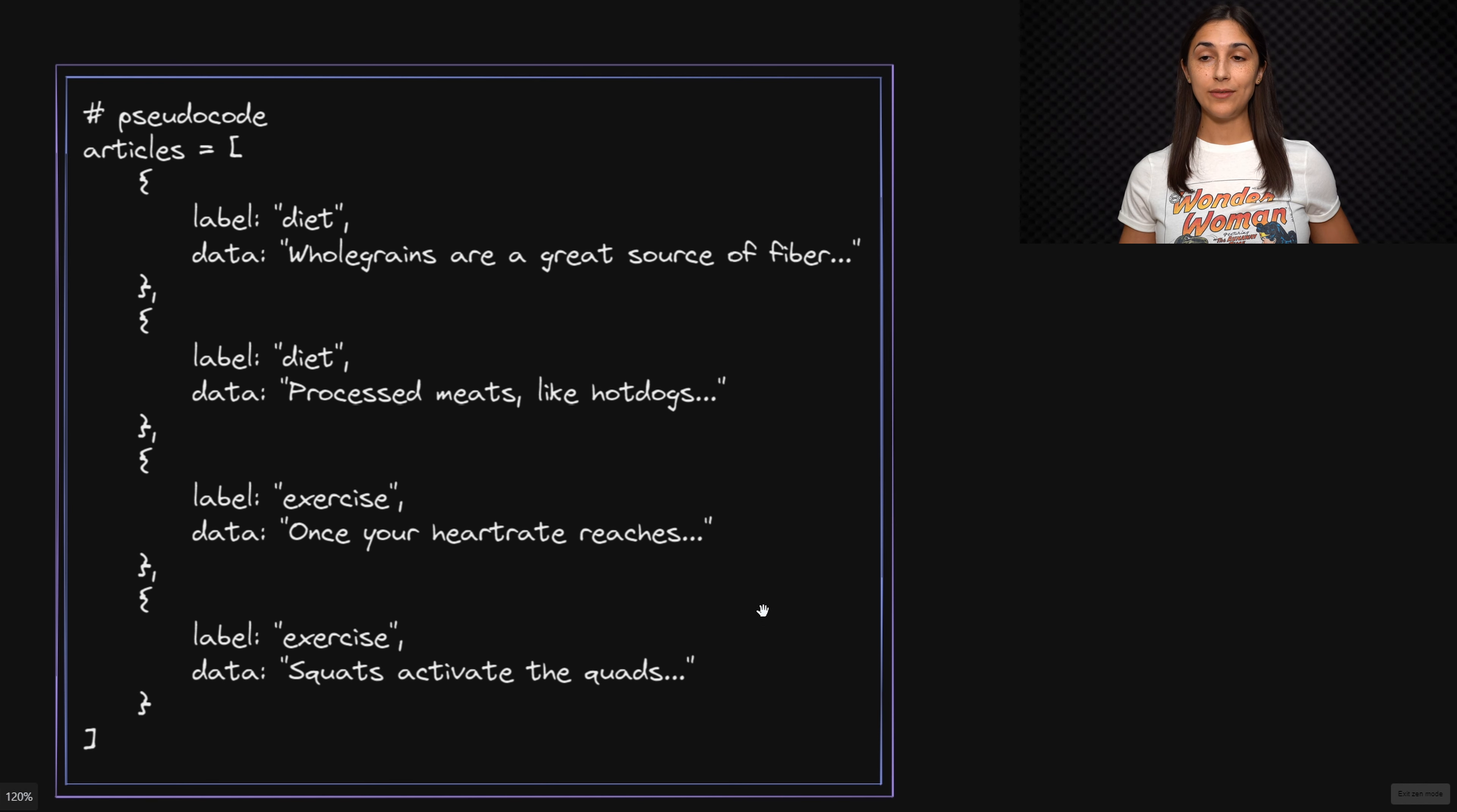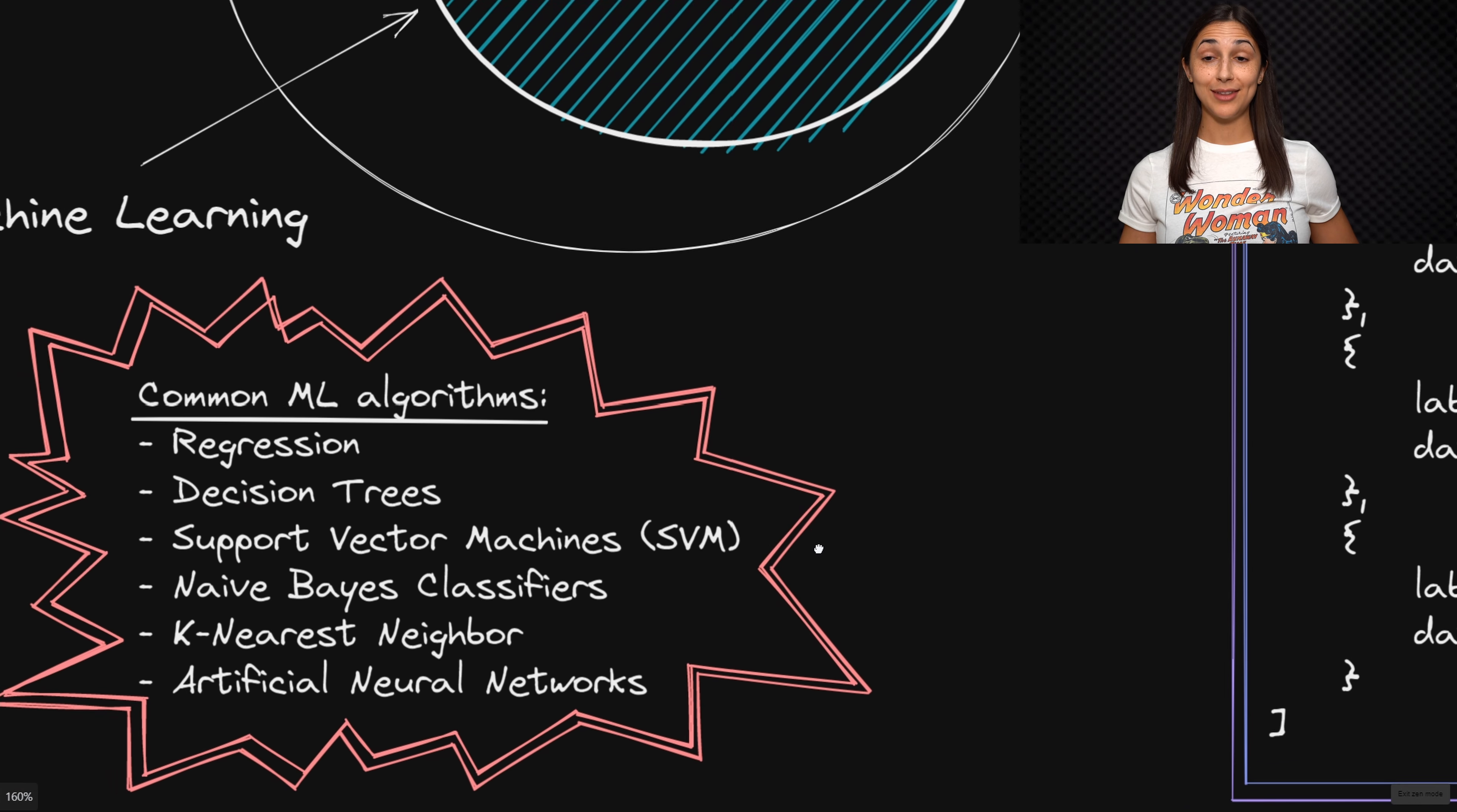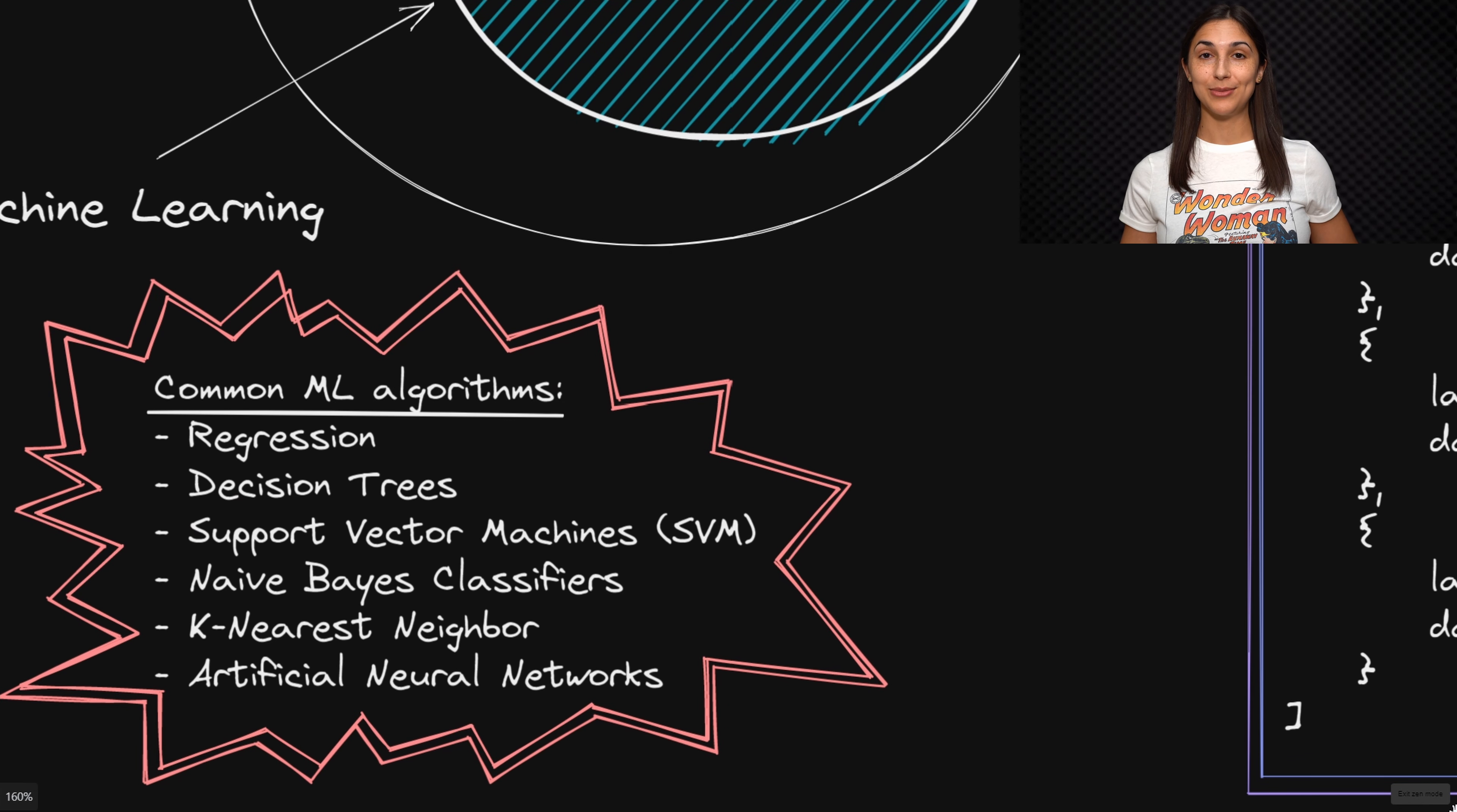Now we've talked about learning algorithms in general, but within the field of machine learning, we have several different types of machine learning algorithms. These algorithms are some of the most common ML algorithms like regression, decision trees, SVMs, Naive Bayes classifiers, k-nearest neighbor, and artificial neural networks.